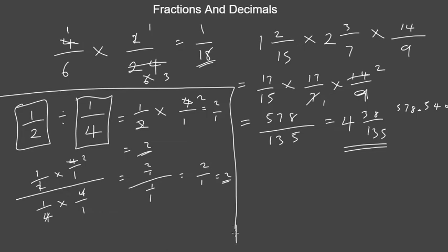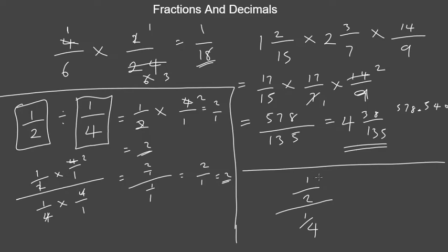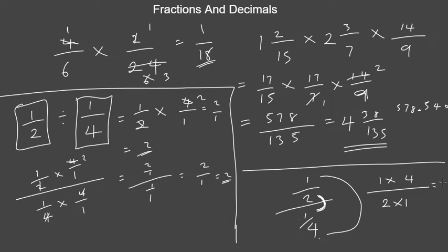Here's a shortcut for division: for 1 over 2 divided by 1 over 4, think of the extreme ends multiplied together — that's 1 times 4 — and divide by the near terms multiplied — that's 2 times 1. So far times far divided by near times near gives you 4 over 2, which is 2. This shortcut gives the same result.